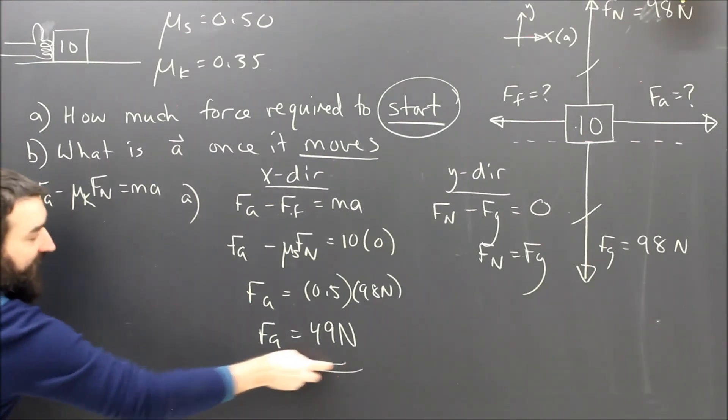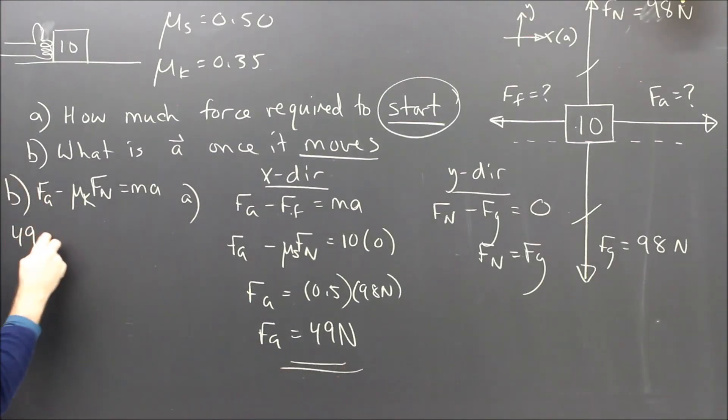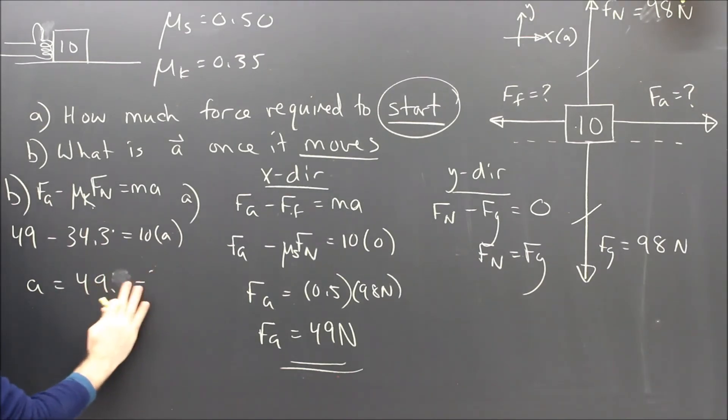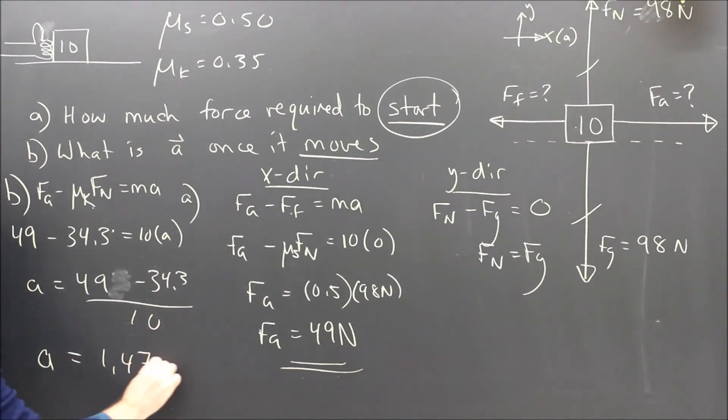So this time I know Fa from before, so 49 minus μ Fn, that's going to be 34.3, and that's going to be equal to 10 times the acceleration. So the acceleration equals 49 minus 34.3 divided by 10, so the acceleration is equal to 1.47 meters per second squared.